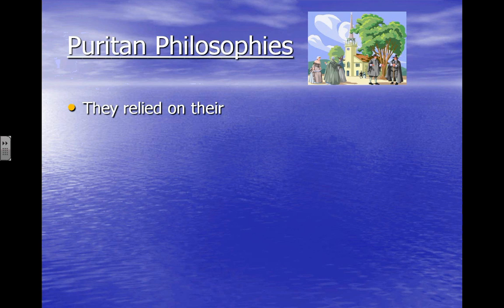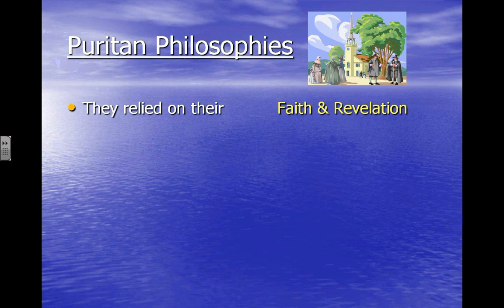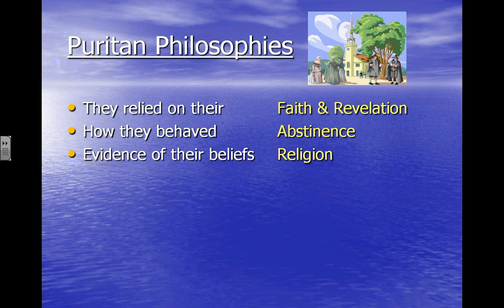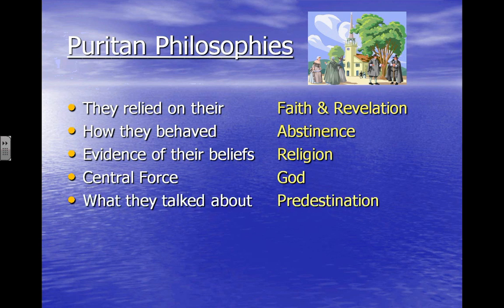This should go to your charts — take your charts out and fill these in. We're going to wrap up in a nutshell what Puritan philosophies look like. They relied on revelations from God and their belief and faith in God. They behaved with what we call abstinence — to abstain or to not do — so they didn't do a lot of things they thought were sinful: dancing, gambling, going to plays. They found evidence of their beliefs in religion and God's law, and their center of force was God. They talked a lot about predestination — if you were taught that life on this earth is short, and indeed it was with a high mortality rate, you were more concerned about what was going to happen to you after you died, so that became a pretty hot topic of conversation.